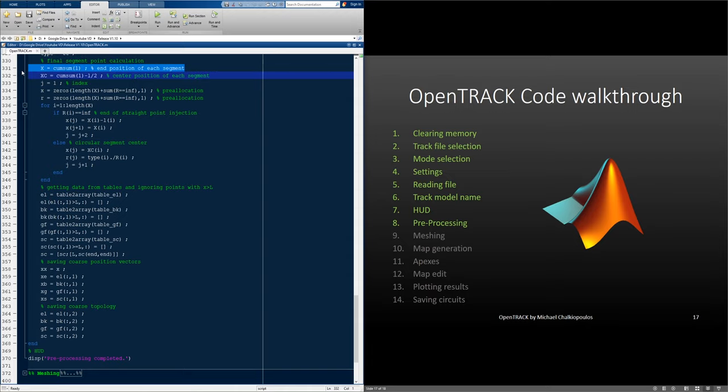Here is where we go on to create the new final vectors. First, we calculate the position vector that shows the end of each segment, and the vector pointing to the center of each segment. Then, we create a new j-index and pre-allocate in memory the new position and radius vectors.